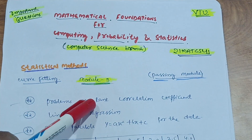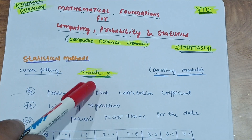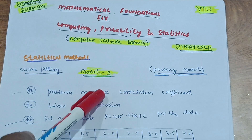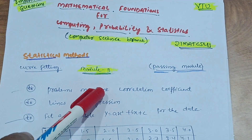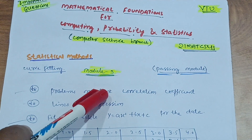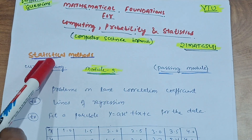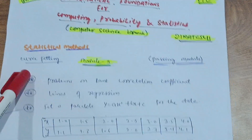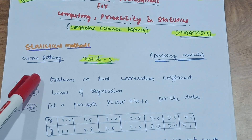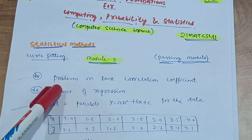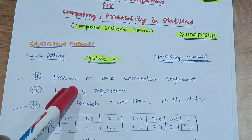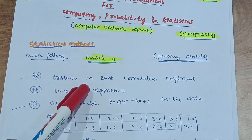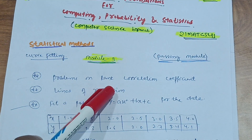Let me start. First, Module 3 is the passing module you have to cover. It is a simple module — statistical methods, also called curve fitting. First of all, you have to focus on problems on rank correlation coefficient.